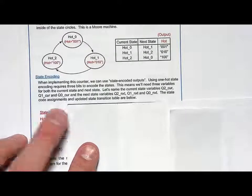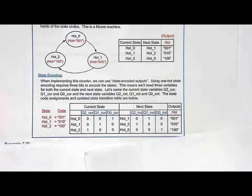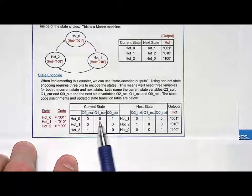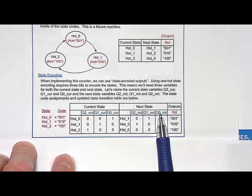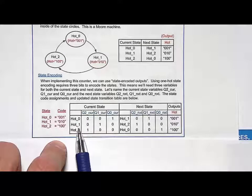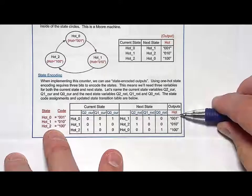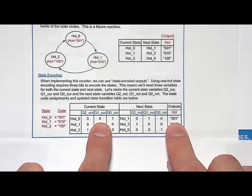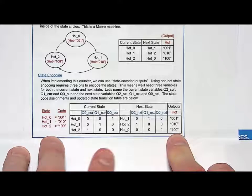Let's look at our state transition table now that we assign the state variable names. We're going to call the state variables q2cur, q1cur, and q0cur — we need three bits. The next state logic variables are q2next, q1next, and q0next. We put in the state codes for hot0, hot1, and hot2 for the current state and also the next state. Now you can really see the power here: the output 'hot' matches the current state code, so that's going to allow us to simply use wires for our output logic. That's the state-encoded output.